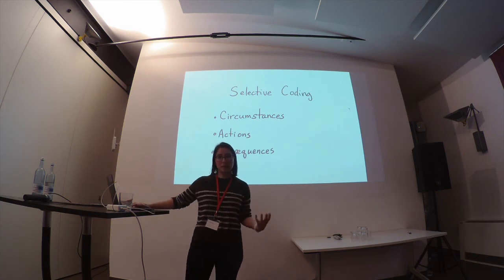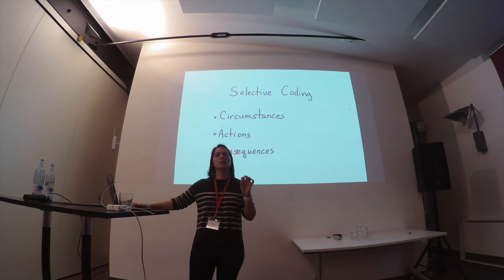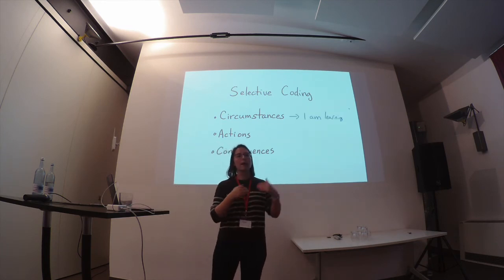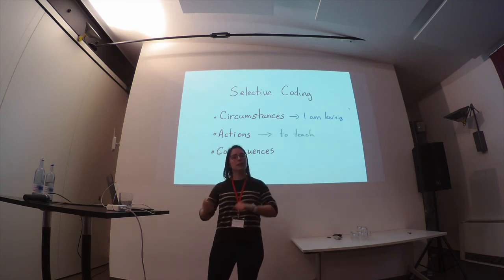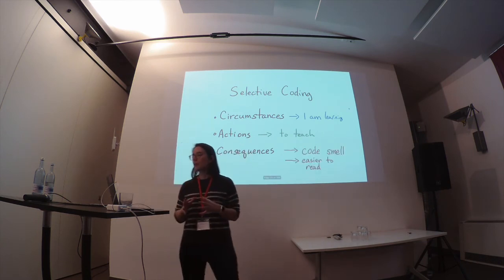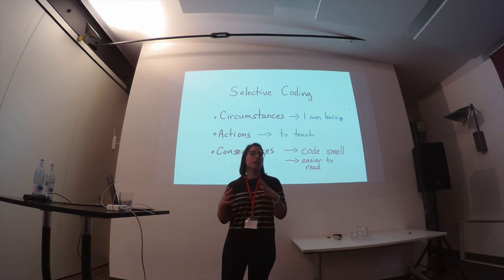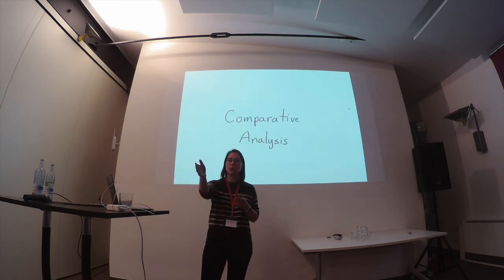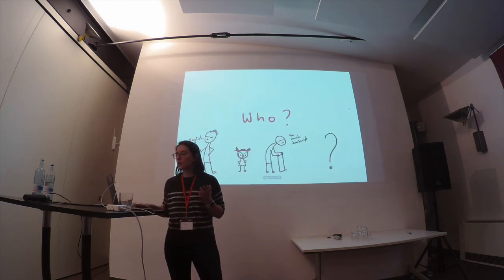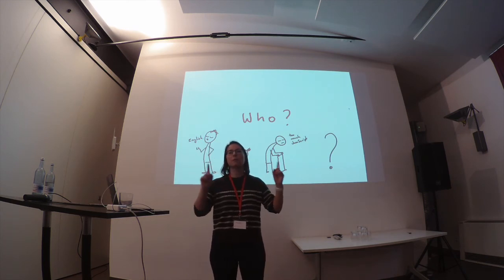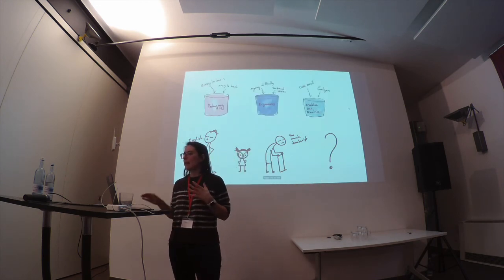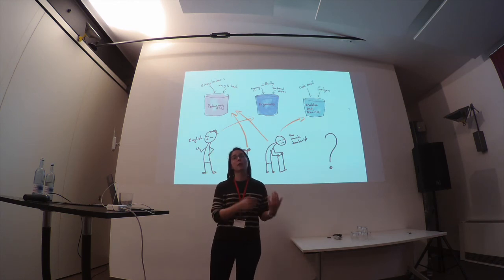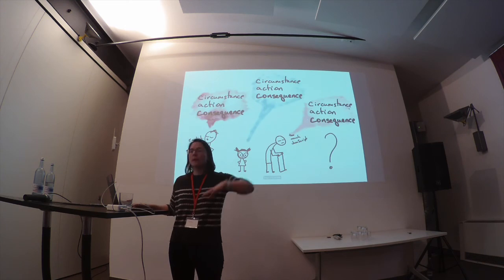Selective coding is the next step after categorization, where you try to understand how different categories relate to different parts of the process. Some codes are related to circumstances — for example, 'I am learning, I am a learner.' Some are actions — 'I am teaching, I am an experienced programmer teaching others.' And others are consequences — 'I find this encourages code smell.' This is a way to build a story about what the person is saying. Finally, you do comparative analysis — for example, if the person is a native English speaker, they may have a different approach to a beginner, who may have a different approach to an experienced programmer. One interesting thing is that sometimes beginners and experts agree more than people who are intermediate.